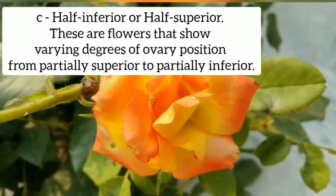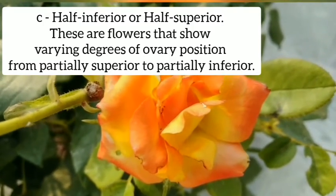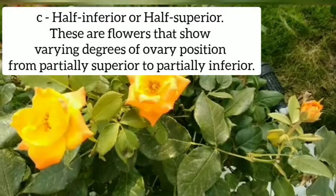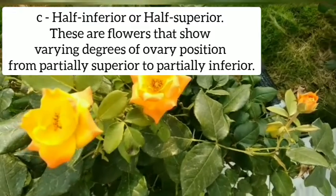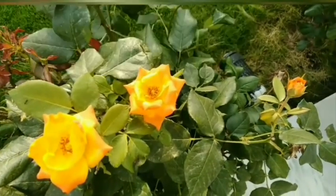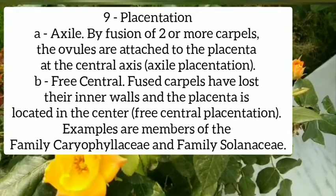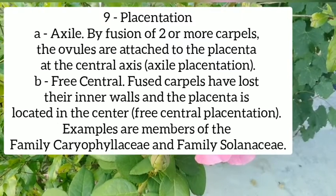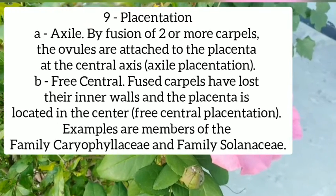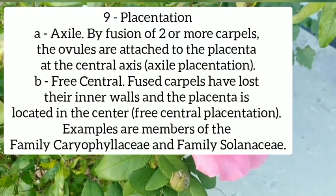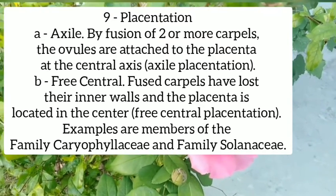Third, half-inferior or half-superior: these are flowers that show varying degrees of ovary position, from partially superior to partially inferior. Ninth, placentation: it includes first, axile — by fusion of two or more carpels, the ovules are attached to the placenta at the central axis, termed axile placentation.